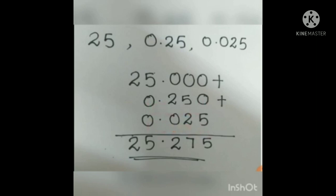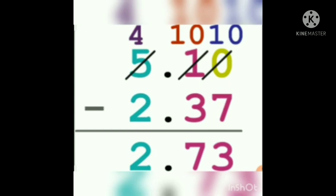The same method is used for subtraction. The basic rule is we subtract the smaller number from the larger number — the same applies to decimal numbers. For example: 5.10 minus 2.37. We cannot subtract 7 from 0, so we borrow from 1 — the 1 becomes 0 and the 0 becomes 10. Then 10 minus 7 is 3. The 1 cancelled to 0, so we borrow from 5 — 5 becomes 4, and the 0 becomes 10. Then 10 minus 3 is 7, and 4 minus 2 is 2.